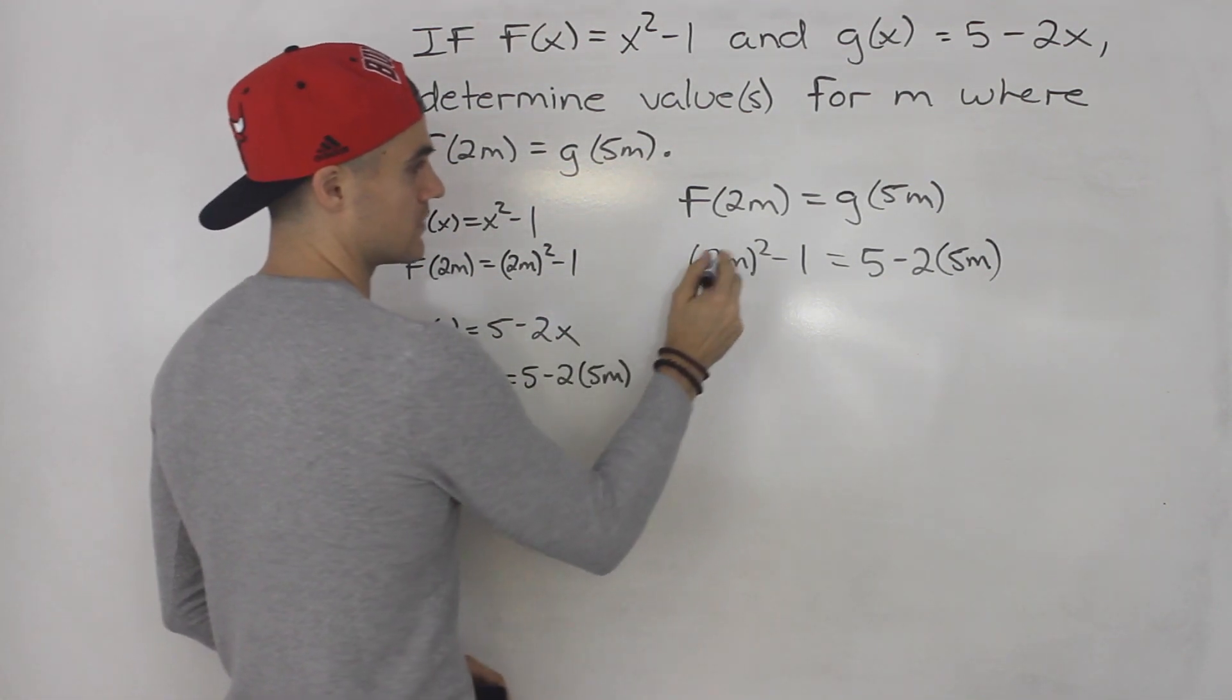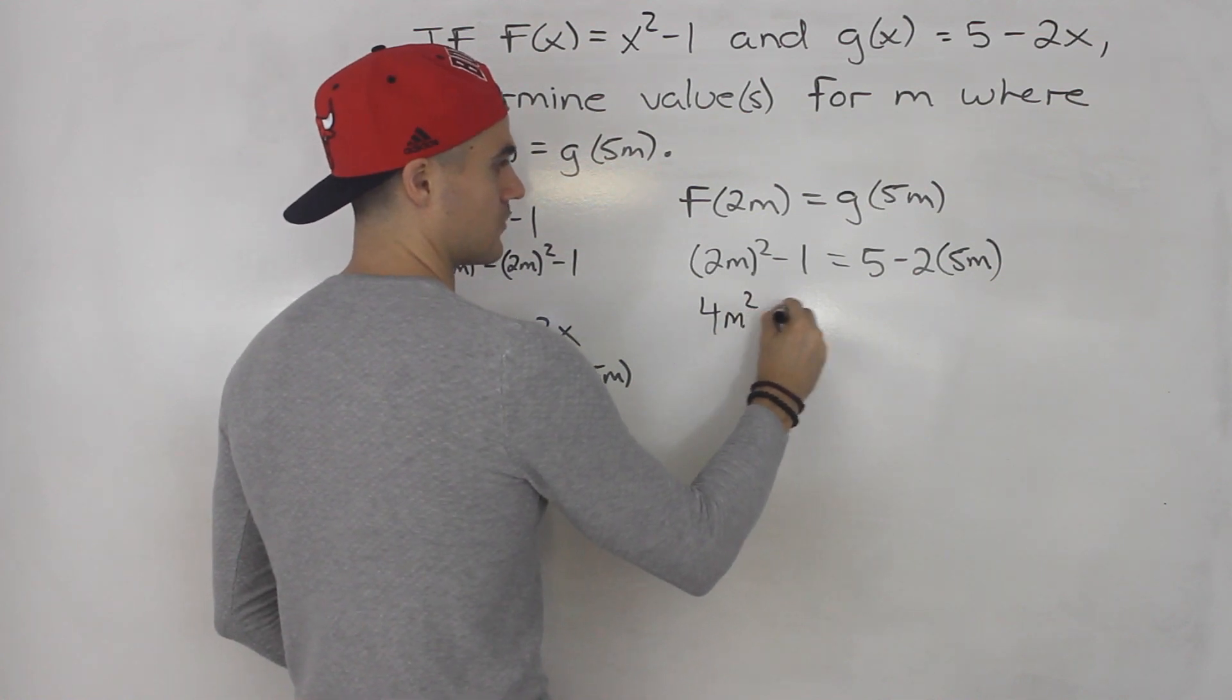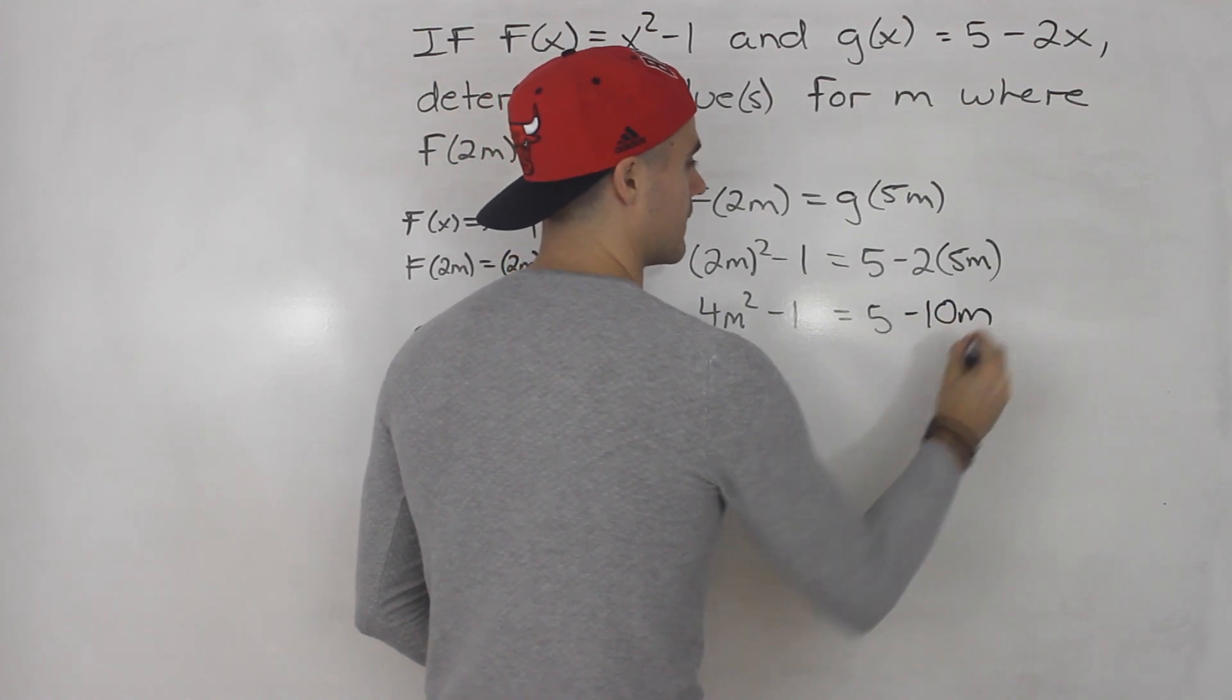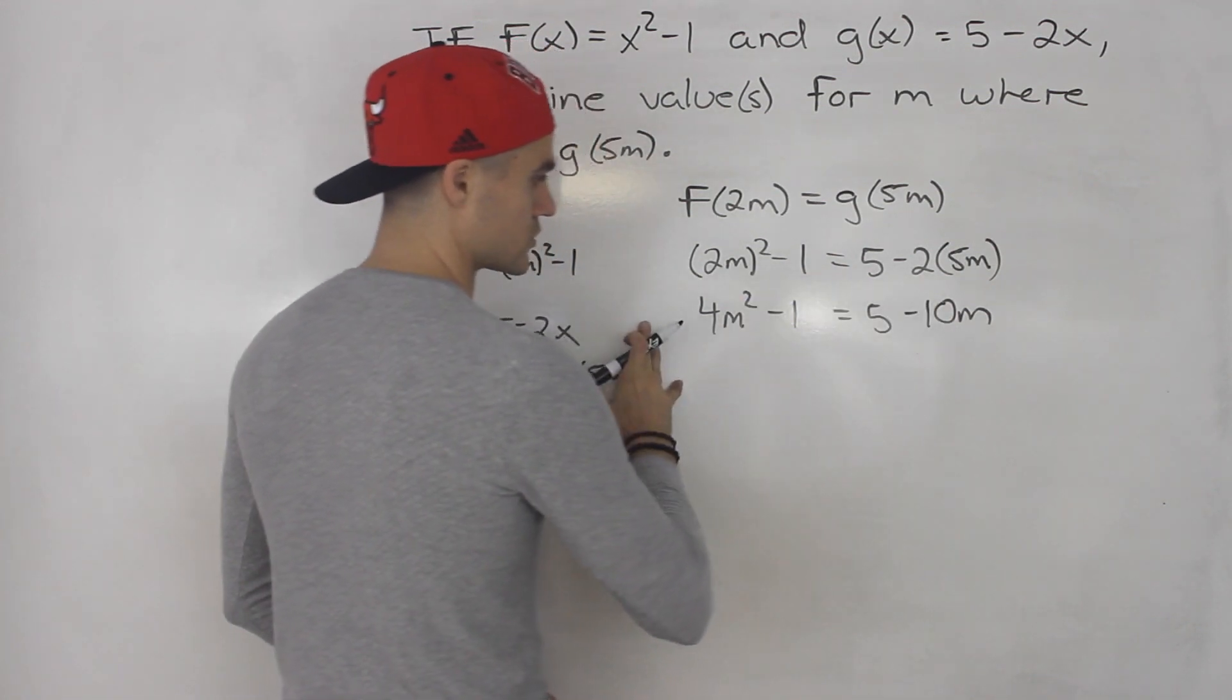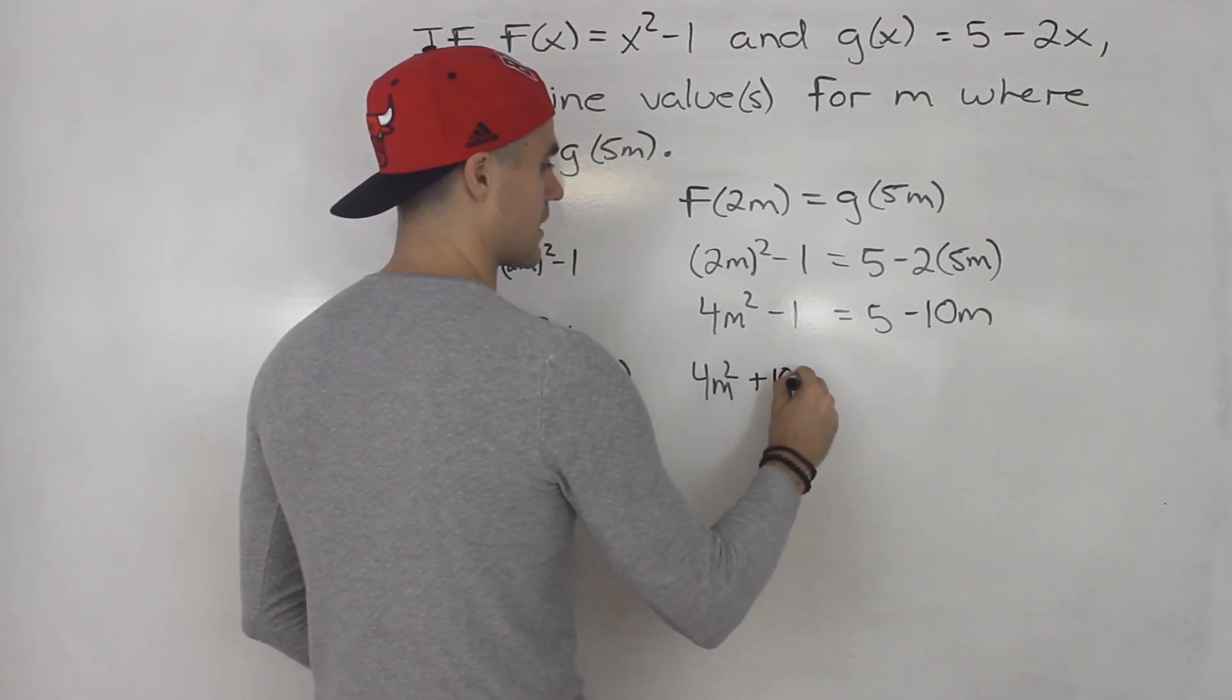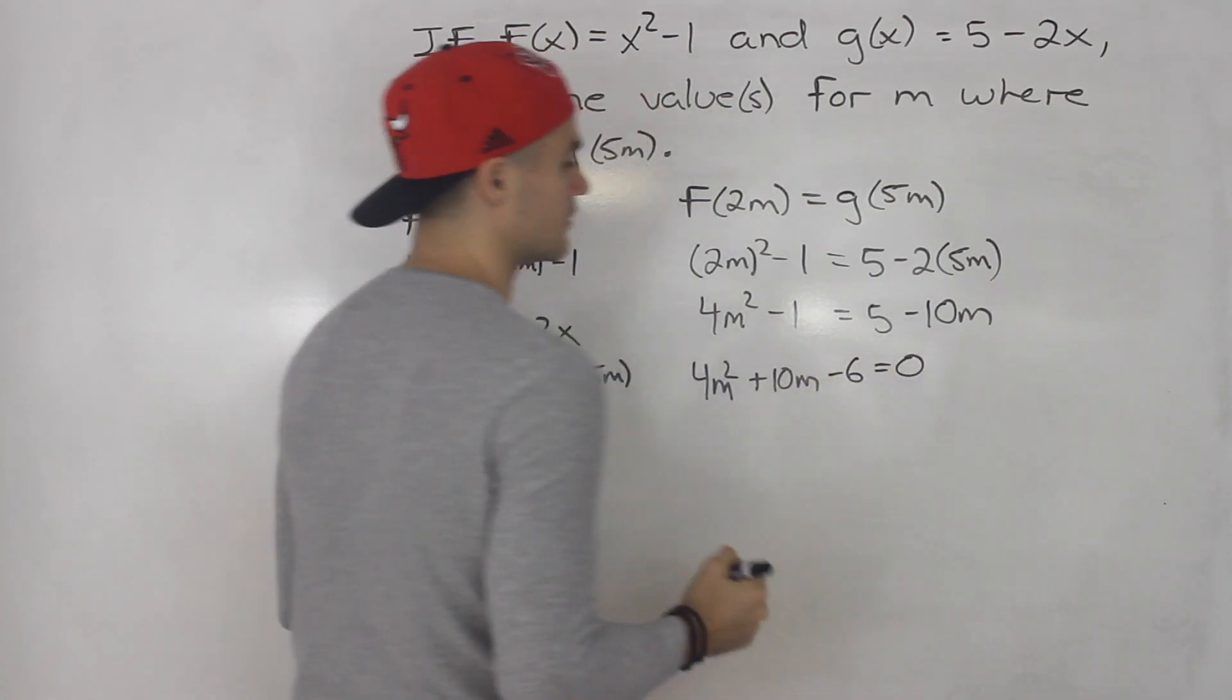2m squared, we distribute the exponent to all expressions. 2 squared is 4, m squared is m². We have minus 1. This equals 5 minus 2 times 5m, which is -10m. Now we bring everything to one side. 4m² plus—negative 10m comes over as positive 10m. Positive 5 comes over as negative 5. So -1 - 5 gives us -6. That equals 0.